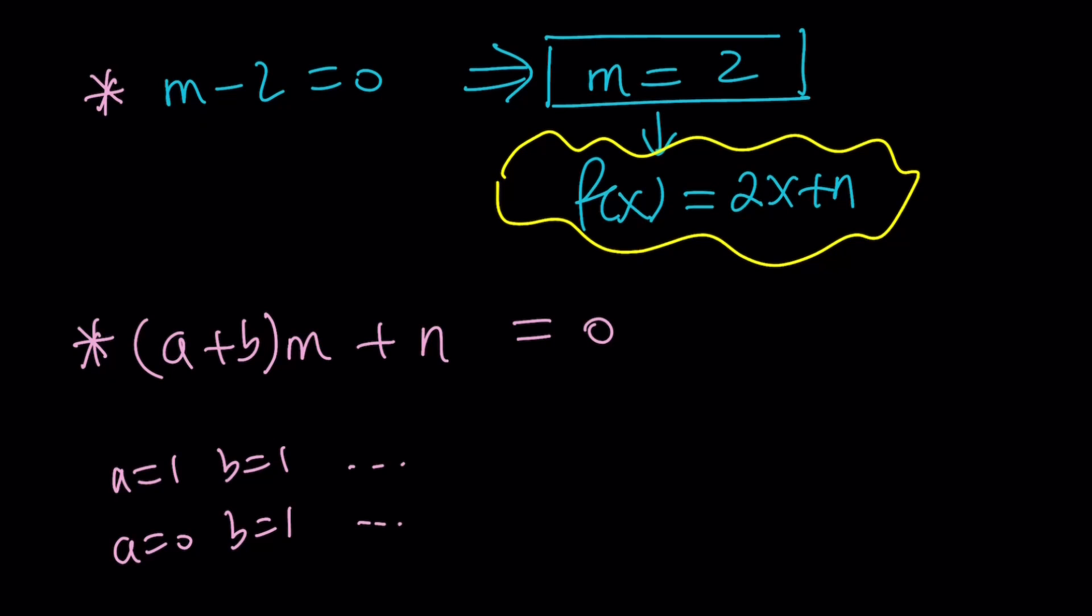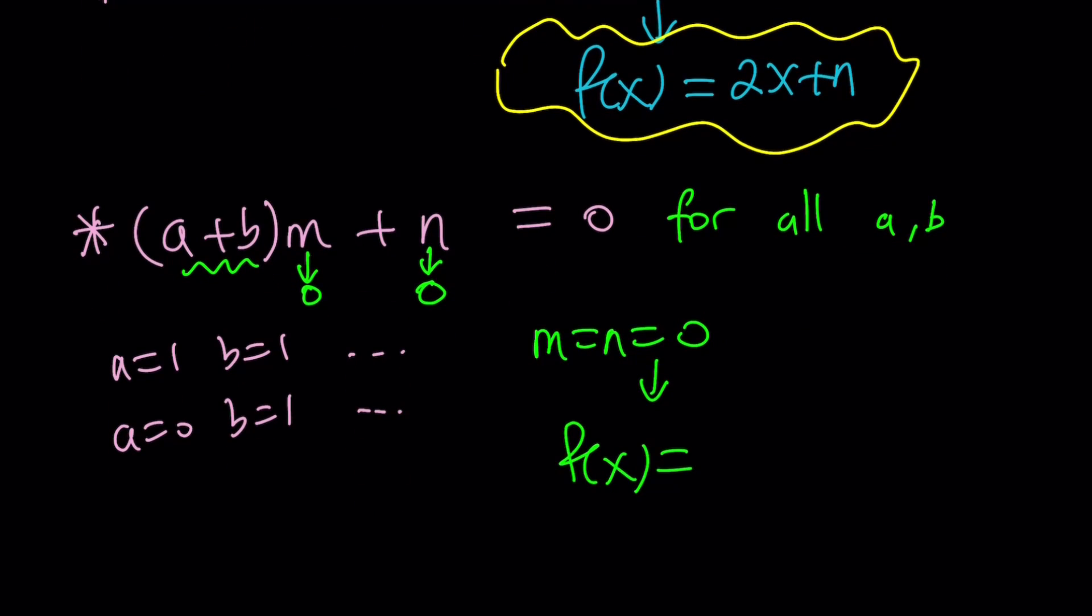But think about it. In order for this to equal 0 for all a, b—this is true for all a, b that are integers—you know what that means? It means m must be 0, because this is a variable. This is kind of like a variable. It can be pretty much like x, right? mx plus n, remember that? But it's identically 0. So m needs to be 0, and n needs to be 0 at the same time. So m equals n equals 0 gives us another solution, which is f of x equals 0 identically. That will be our second solution. In other words, this equation has two solutions. One of them is f of x equals 2x plus n. The other one is f of x equals 0.